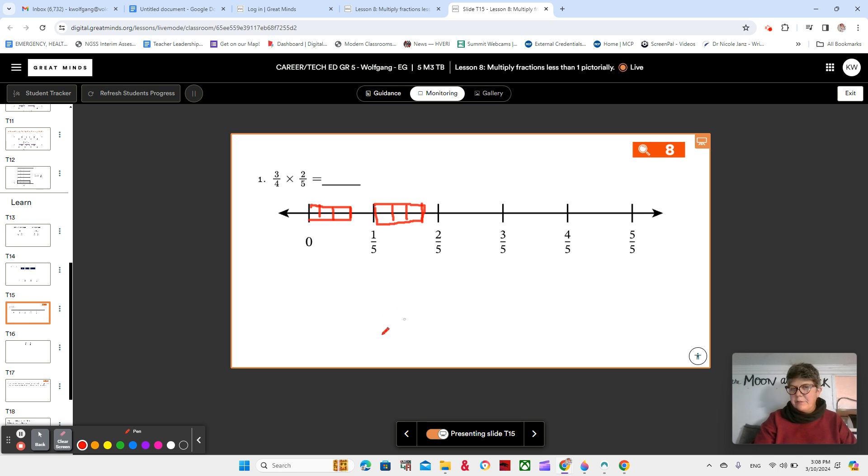Okay, maybe you have something similar to what I have. I went ahead and broke my first fifth into one, two, three, four parts, and I marked out three of those, because I'm taking three fourths. You can see one, two, three, four sections, three fourths of one fifth, and then three fourths of the next fifth.